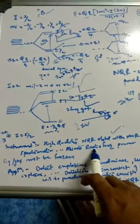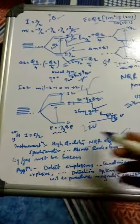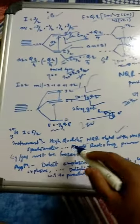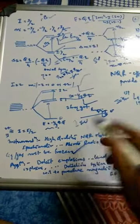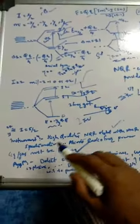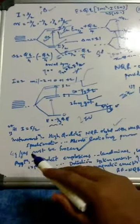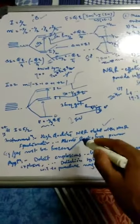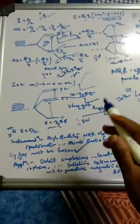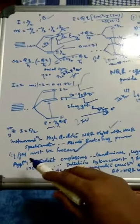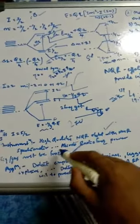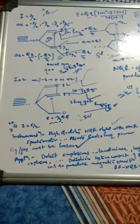NQR spectra are acquired by absorption of radiofrequency power. Importantly, liquids and gases must be frozen — only solid samples can be used. Unlike some techniques, NQR cannot be performed on liquids, solutions, or gases without freezing them first.